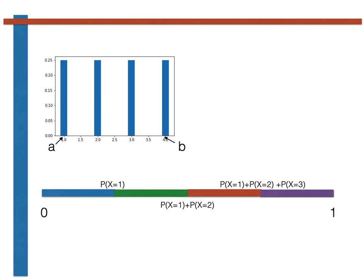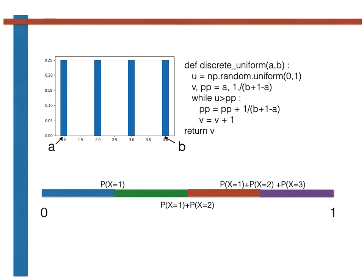If we set a and b equal to the lowest and highest integer values that our random variable can take, the following function can be used to sample variables from this distribution. This function uses the ideas that I've just explained using pictures in order to generate random variables from this distribution.